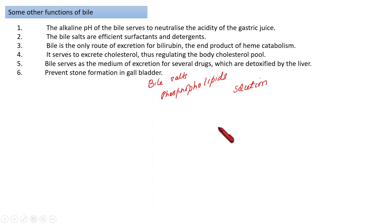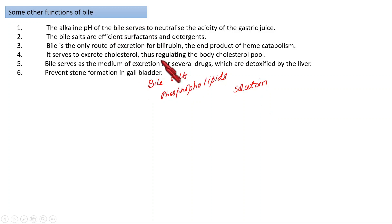We have seen so many functions of bile in this section. The main function is helping in the digestion and absorption of lipids. We also saw bile's role in regulatory pathways, as a nutrient signaling molecule, and in maintaining cholesterol levels indirectly through enterohepatic circulation. Bile salt is very important and performs so many physiologically important functions for the body. Thank you.